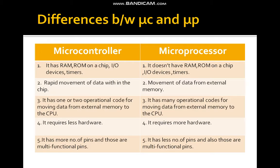In a microcontroller, there is rapid movement of data within the chip — rapid means fast movement of data within the chip, with no delay. But in a microprocessor, movement of data from external memory takes time, so some delay is present.